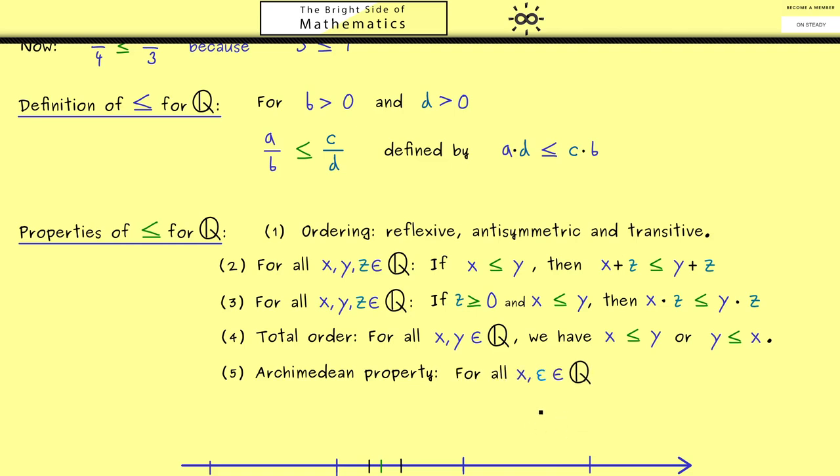OK, so let's take positive rational numbers x and epsilon. Now the idea is that we add epsilon as often as we want, and at some point we will exceed x. Of course, for this whole sum, we can just use our short notation with the multiplication with the natural number n.